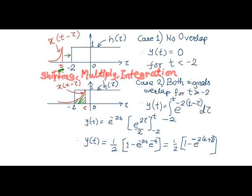The overlap starts at minus 2 and the overlap will continue greater than minus 2. Thus the interval of t is decided accordingly.